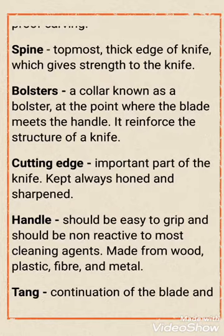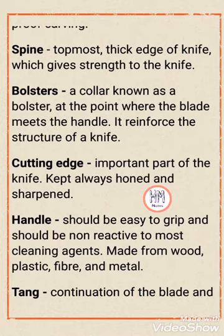Next one is the spine. The spine is the topmost thick edge of the knife which gives strength to the knife. You can think of it like the spinal cord in a human body — just as the spine supports the body, the spine of the knife is the thick topmost layer that gives the knife strength at the time of cutting.